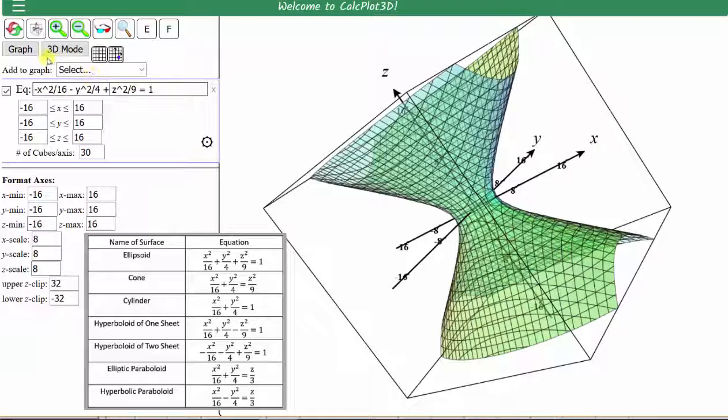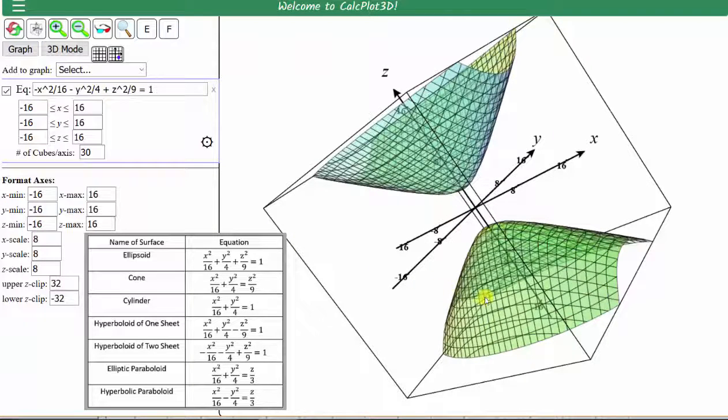After making the changes, click graph. And now we have the hyperboloid of two sheets.